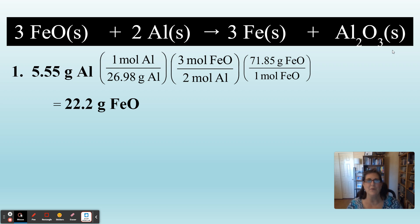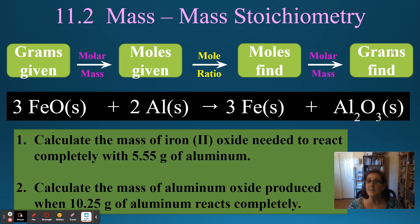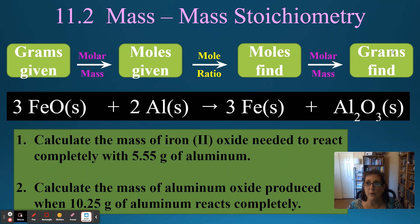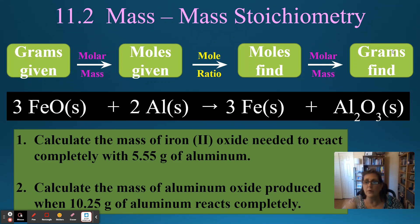You just did your first stoichiometry problem! These are long, three-step problems — you did very well. Let's go back to the previous slide and look at the second question: calculate the mass of aluminum oxide produced when 10.25 grams of aluminum react completely. So we have two chemicals again — aluminum oxide and aluminum. Two chemicals and a balanced reaction means it's stoichiometry, which means there's a mole ratio in there. This time we're starting with 10.25 grams of aluminum and going to grams of aluminum oxide. Aluminum oxide would have aluminum and oxygen in it, so it must be Al₂O₃.